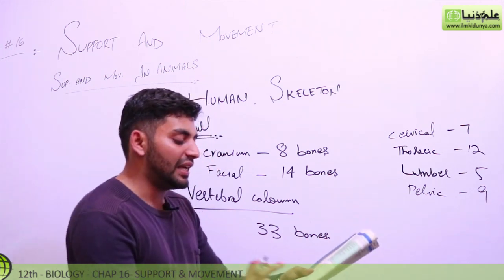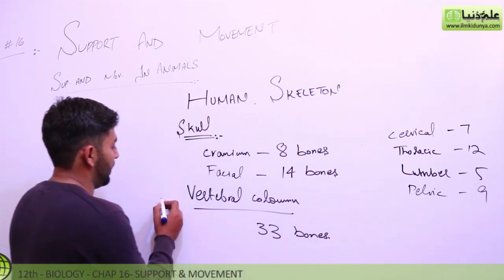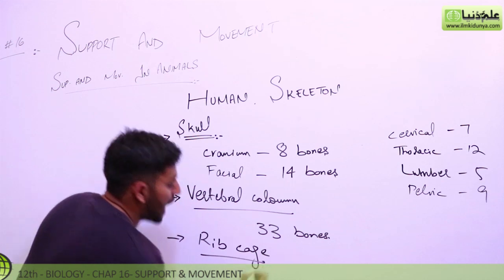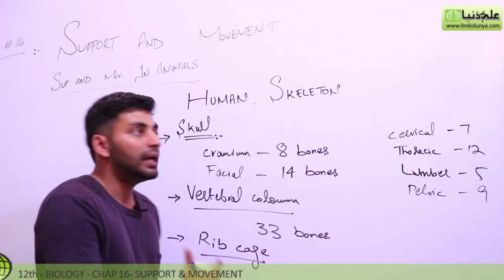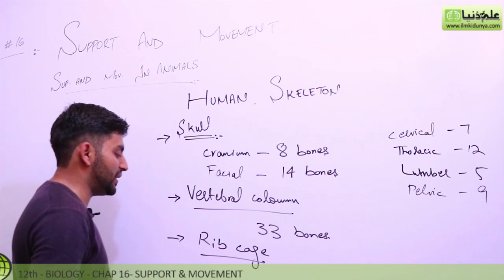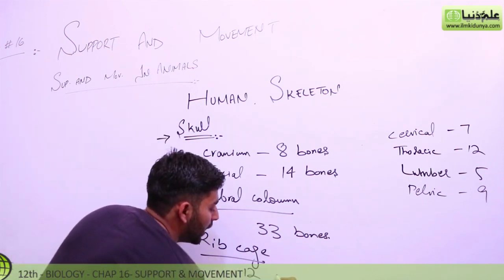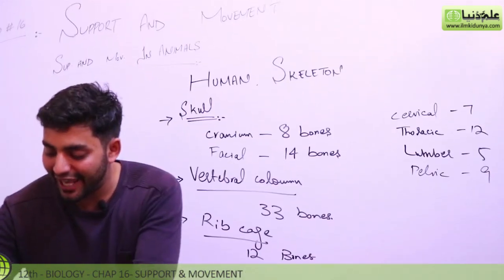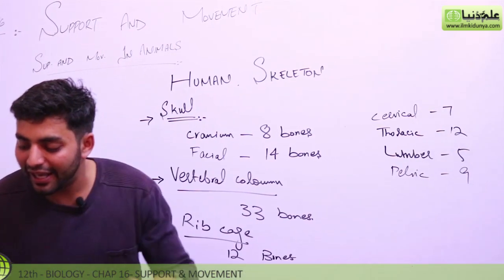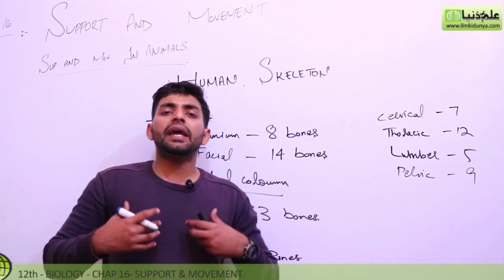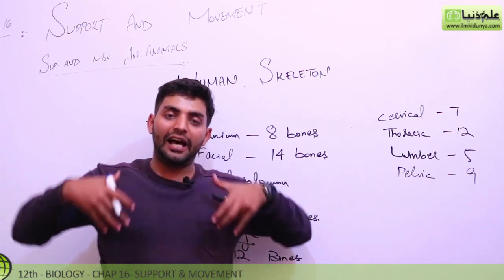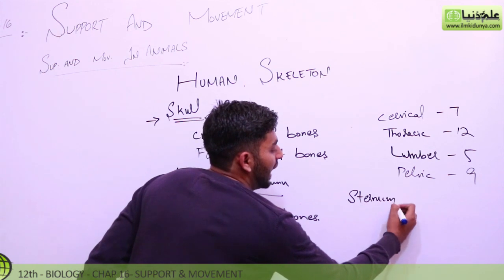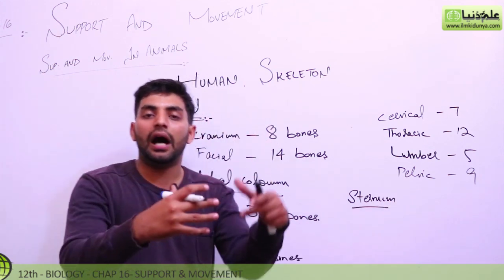Now the last thing in axial skeleton is the rib cage, which is the third and final part. The rib cage basically has 12 bones. One more thing you have to remember: the rib cage has a central bone connected to it which we call the sternum. Remember this terminology, as you will use it in medical studies.